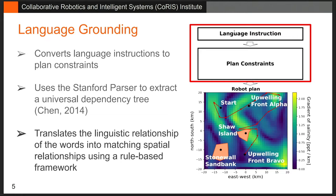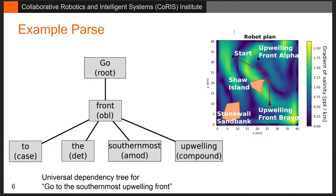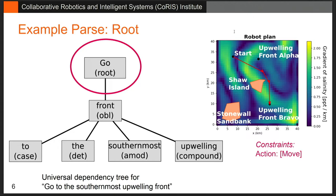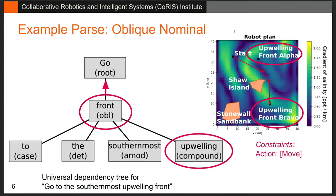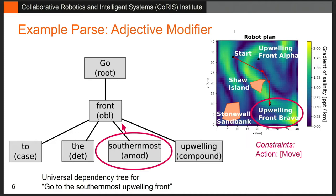For the instruction 'go to the southernmost upwelling front,' we have a dependency tree. Starting at the root dependency, we know this is a shortest path plan because it says 'go.' The oblique-nominal relationship tells us it's a feature in the environment. The adjective modifier 'southernmost' lets us down-select to upwelling front Bravo. Using the case relationship 'to,' we know it's the destination. So we fully define the robot plan: a shortest path to upwelling front Bravo.